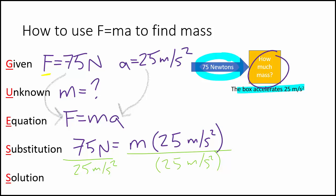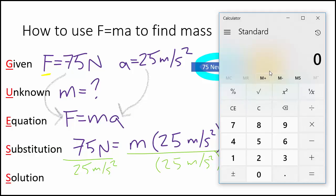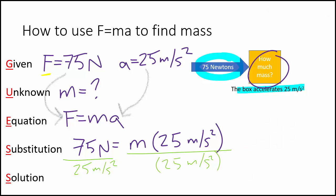I'm going to grab that calculator again. I'm going to take 75 divided by 25. 75 divided by 25. And my answer is going to be 3. Now over here on this side, since I have 25 on the top and on the bottom they get crossed out. So I'm left with m equals 3. And we have to remember that the unit for mass here is kilograms.